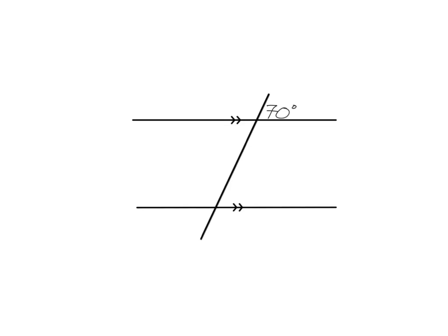Let's have a look at one example to finish off. Imagine we've got a set of parallel lines and we know that this angle up here is 70. We can find all the other angles using our angle facts. Using corresponding angles, here's my upside down F, which tells me this angle here is going to be also equal to 70. The reason for this one is corresponding angles on parallel lines.